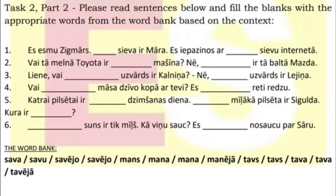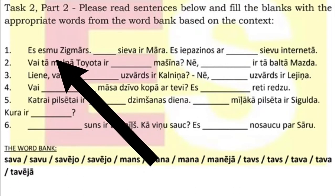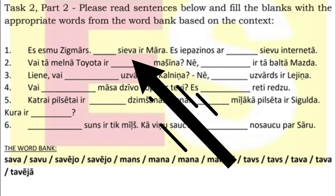Can you give us an example from the exercise, how you could work through it, so that people can see? Yes, of course, I can give you an example. There should be one on your screen popping up now. And in English, it says: I am Zygmars. My wife is Mara.